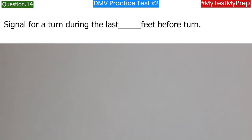Signal for a turn during the last how many feet before the turn? a. 50; b. 100; c. 75. Answer: b. 100 feet.